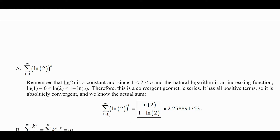It converges to the first term — what you get when you plug in k equals 1, which is natural log of 2 — times 1 over 1 minus the base, which is also natural log of 2. So this converges to natural log of 2 over 1 minus natural log of 2, which works out to about 2.258891353.